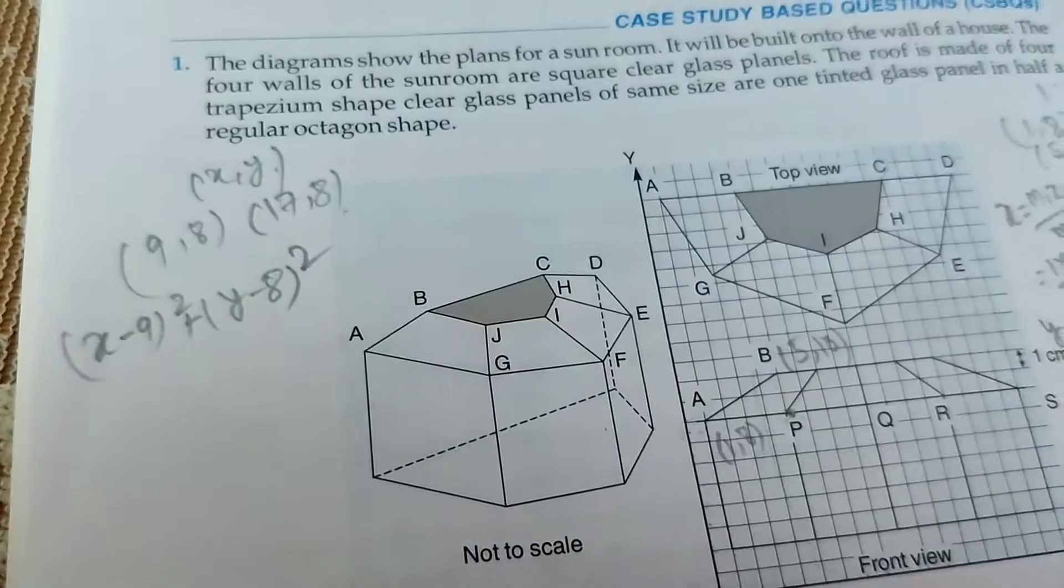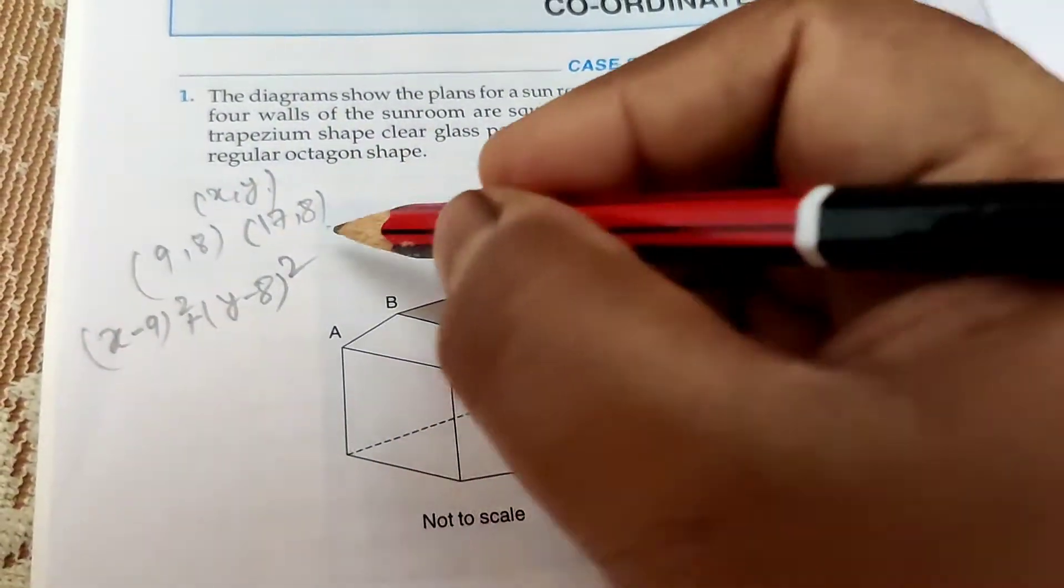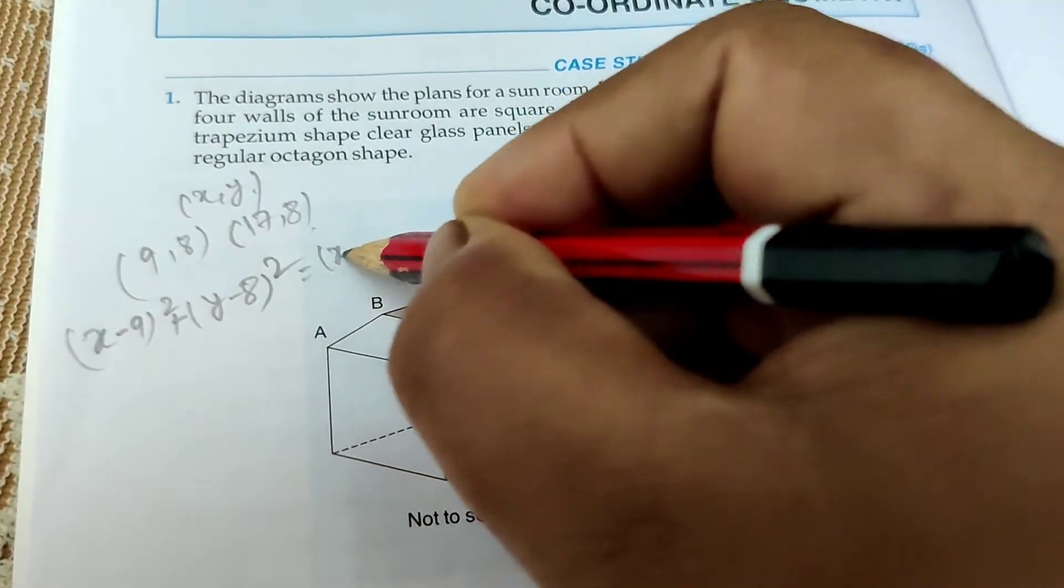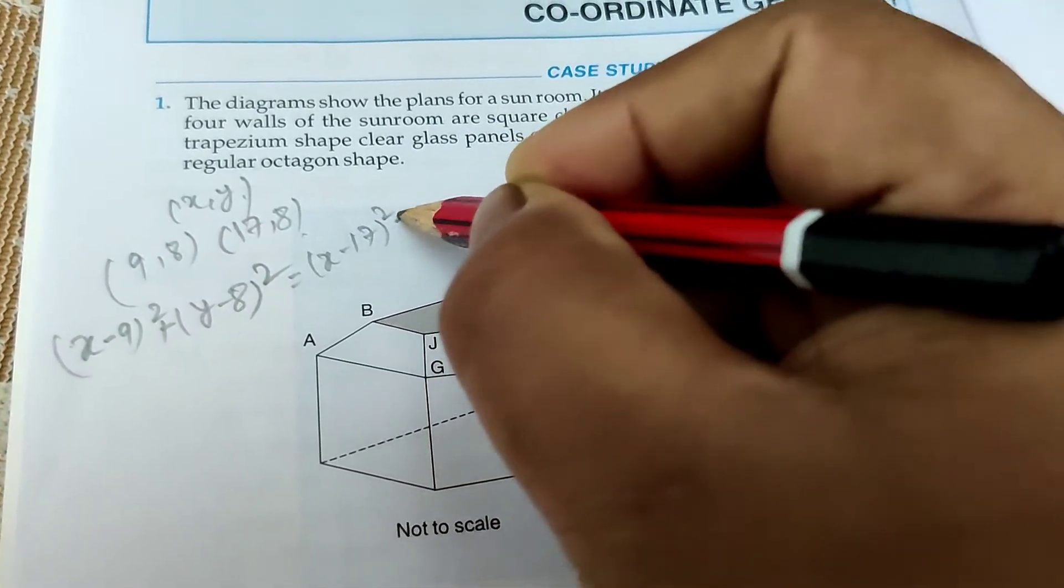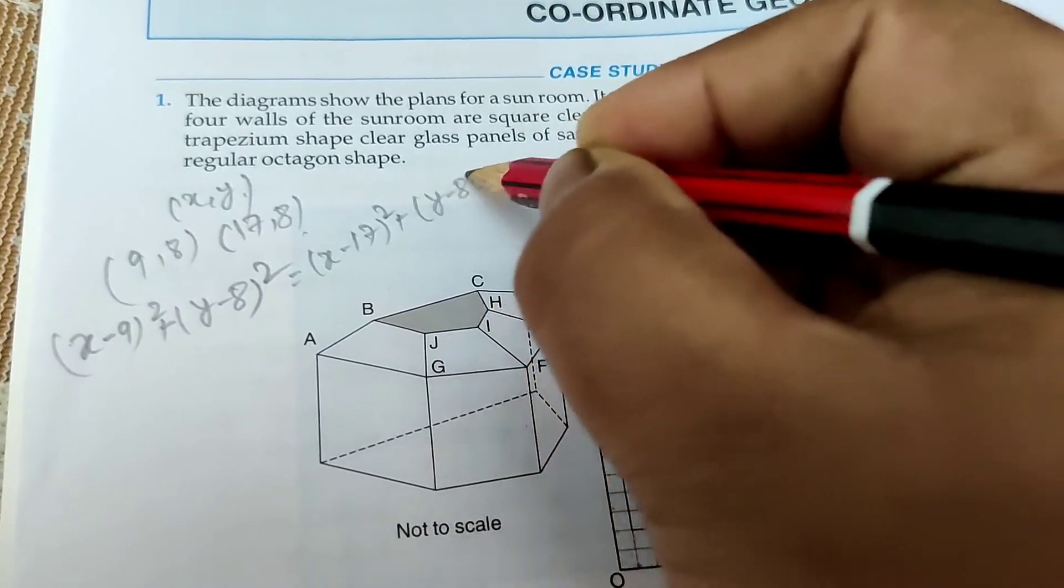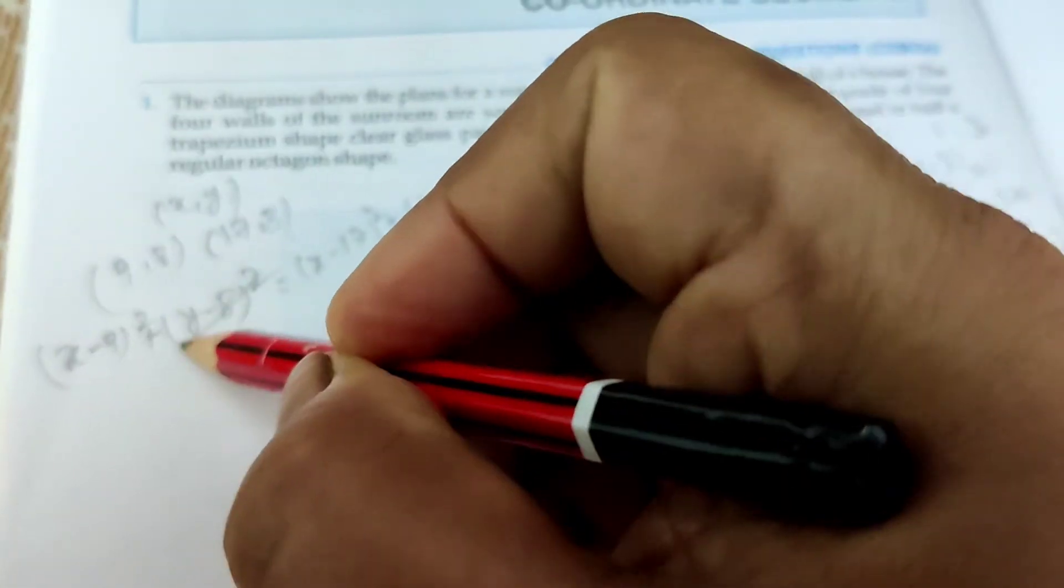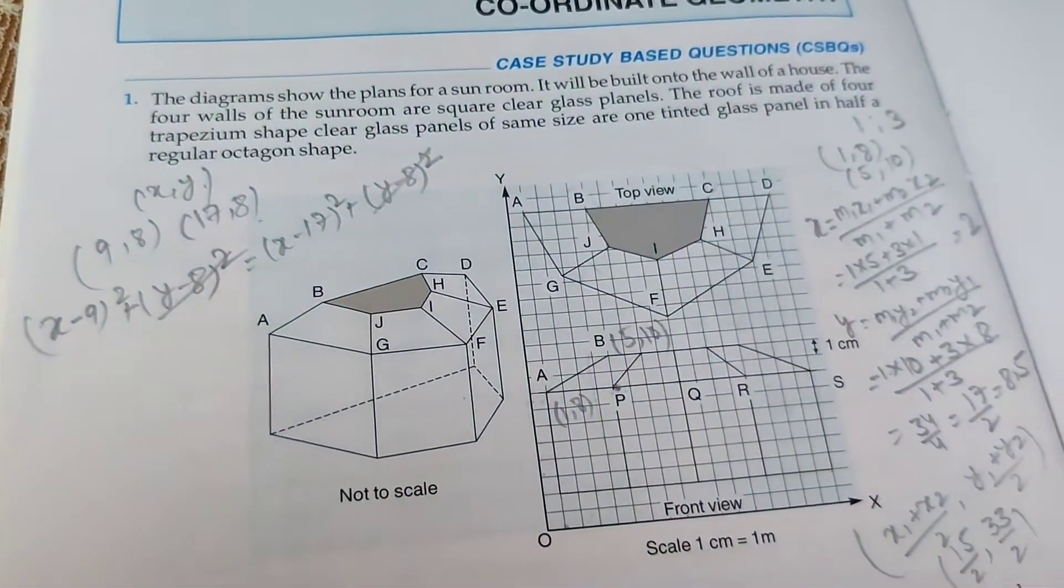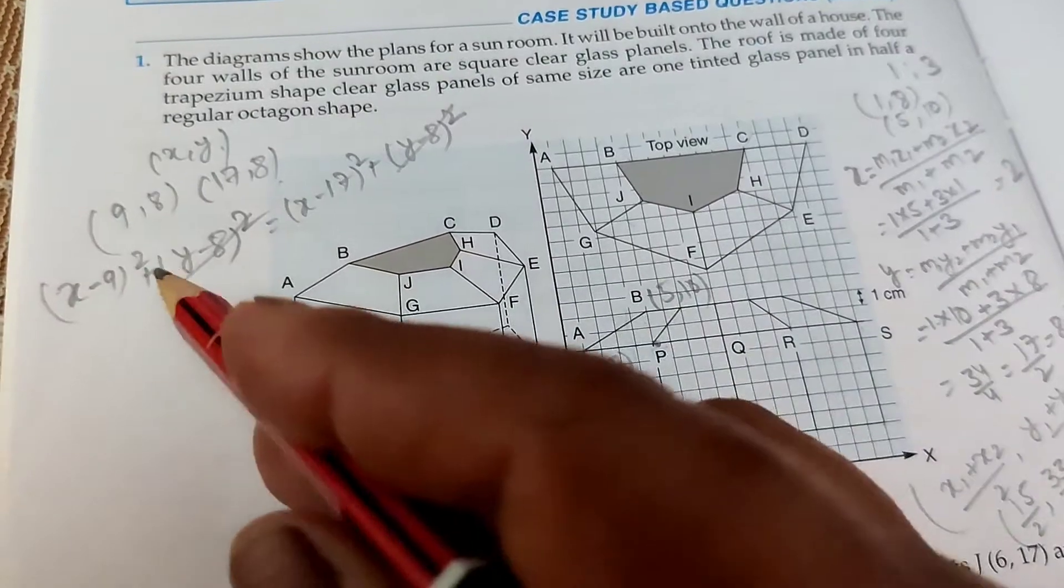You can write the formula: (x minus 9) squared plus (y minus 8) squared equals (x minus 17) squared plus (y minus 8) squared. This is the same number, cancel both sides. Now open the formula of a minus b whole square.